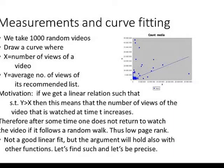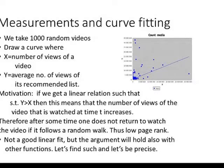We wanted to get statistics on how many views the videos in your recommendation list have, given that you have a certain number of views X. So we chose at random 1,000 videos on YouTube, and drew a curve where the number of views of a video is the X axis, and on the Y axis we have the average number of views of videos in its recommendation list. So we have 1,000 points here.